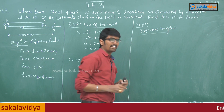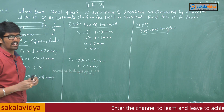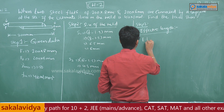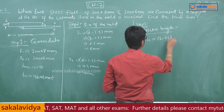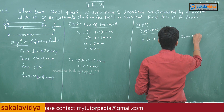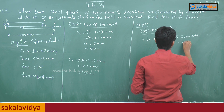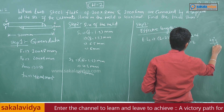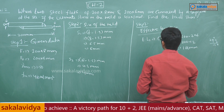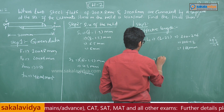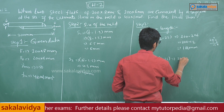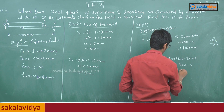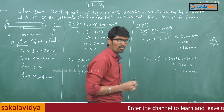Step 3 — Effective lengths. In this case we get two different effective lengths because the plate thicknesses and weld sizes are different. Effective length 1: L1 = 200 − 2×s1 = 200 − 2×6 = 200 − 12 = 188 mm. Effective length 2: L2 = 200 − 2×s2 = 200 − 2×4 = 200 − 8 = 192 mm.